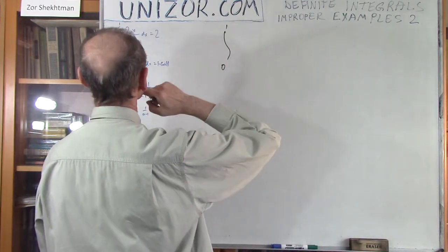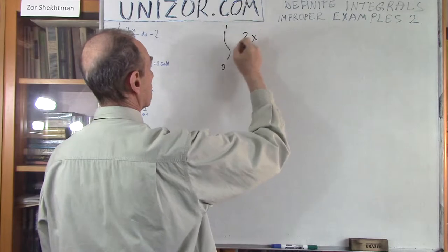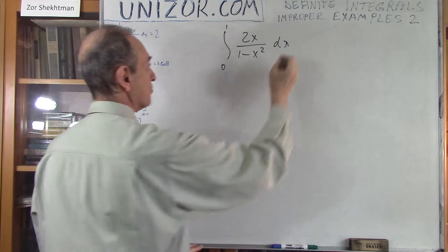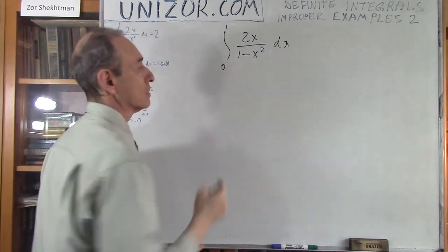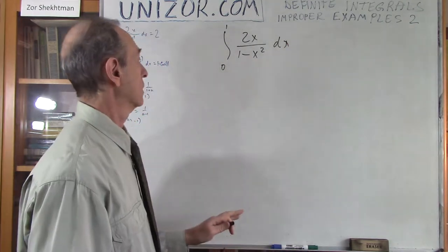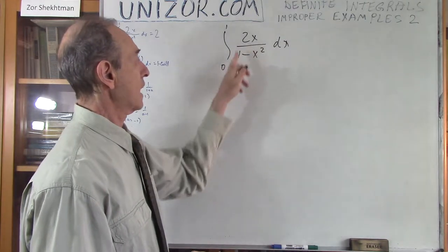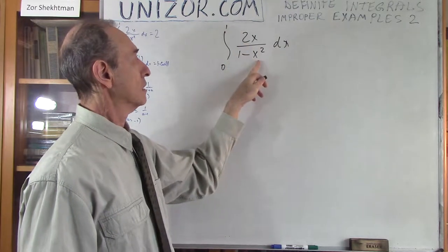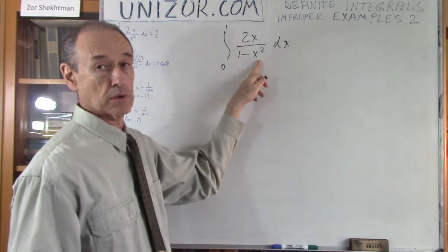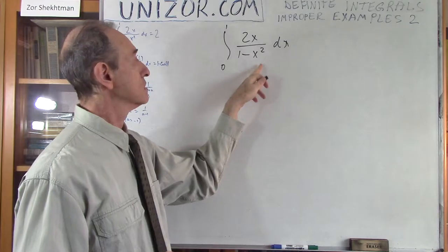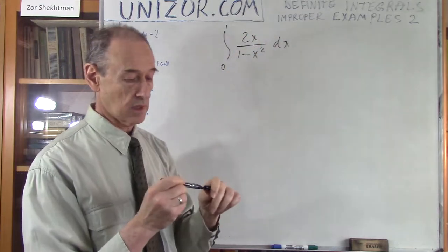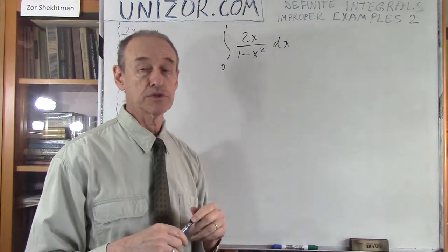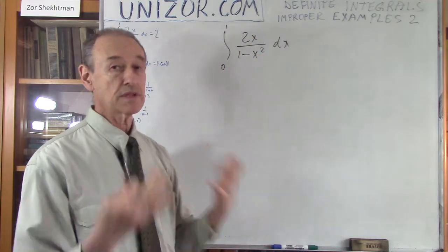Integral from 0 to 1 of 2x divided by (1 minus x squared) dx. What's improper about this particular integral? Well, look — we have this denominator which, as x approaches 1, goes to 0. So if the denominator goes to 0, 2x is basically around 2 when x goes to 1. So we have an infinity.